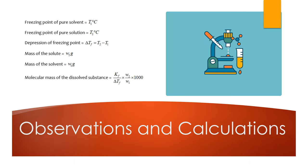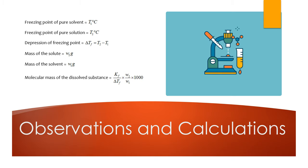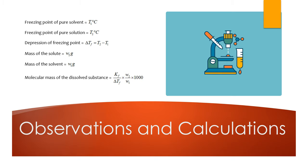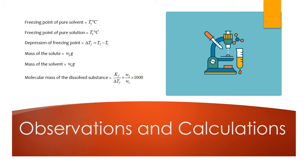For observations and calculations: first, record the freezing point of the pure solvent, denoted T1C — put in your observed value. Next, record the freezing point of the solution, denoted T2C. Then calculate the depression of freezing point: Delta Tf = T1C − T2C. Now we have to find the molecular mass of the dissolved substance.